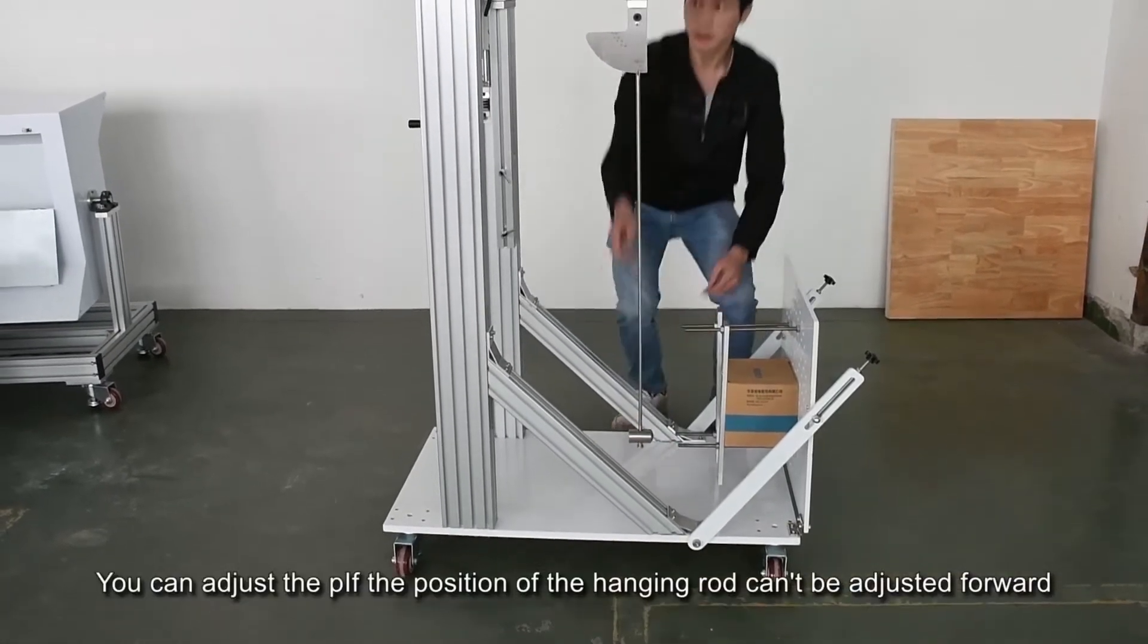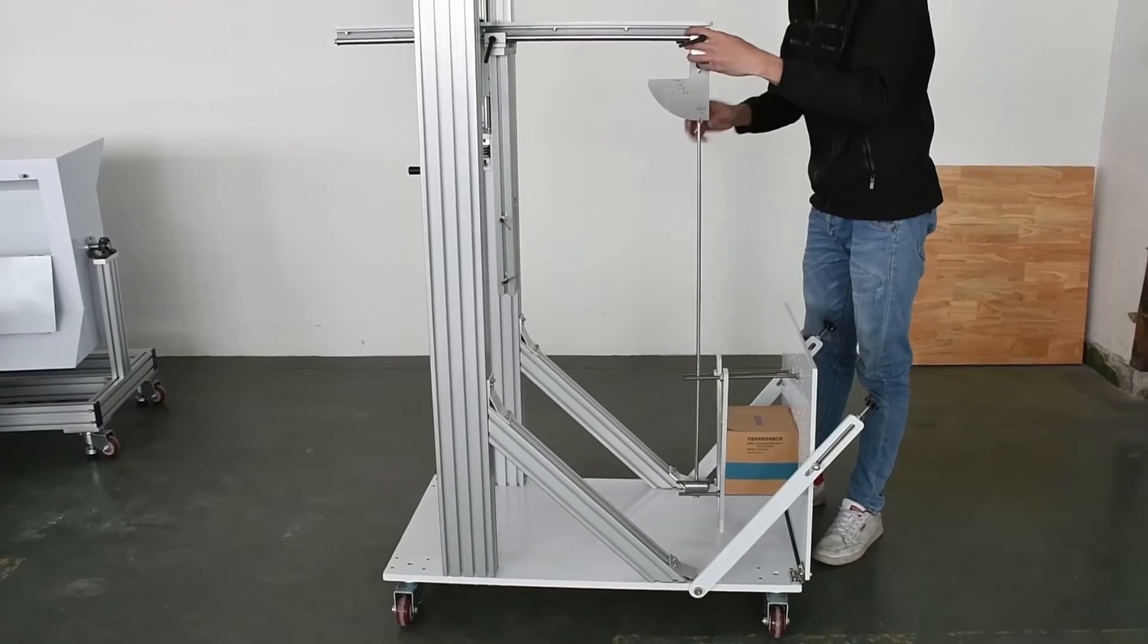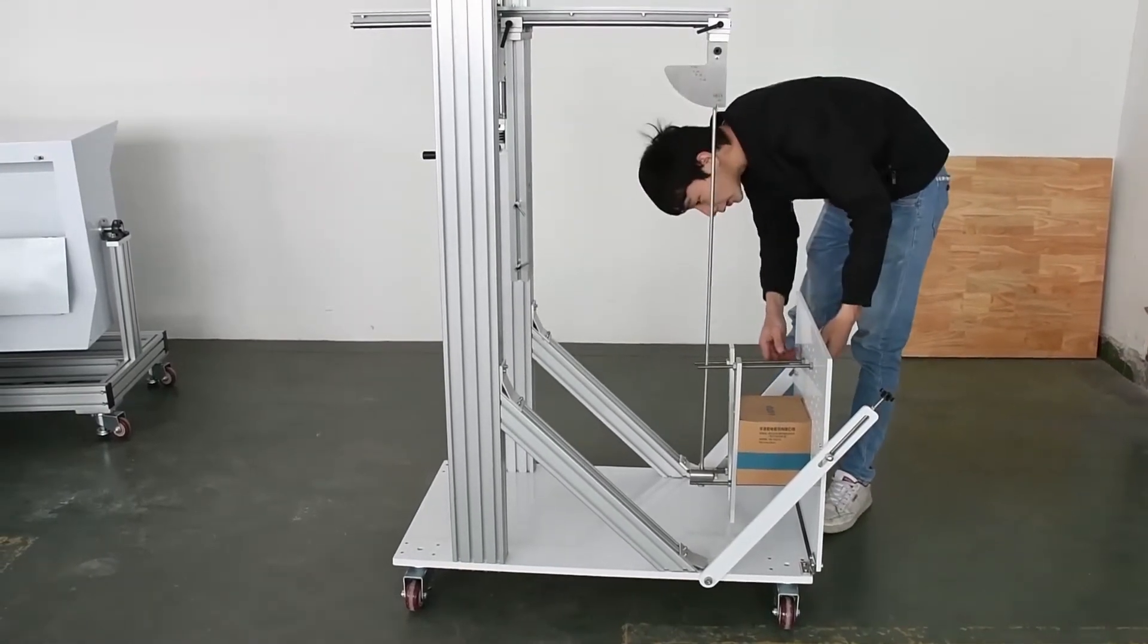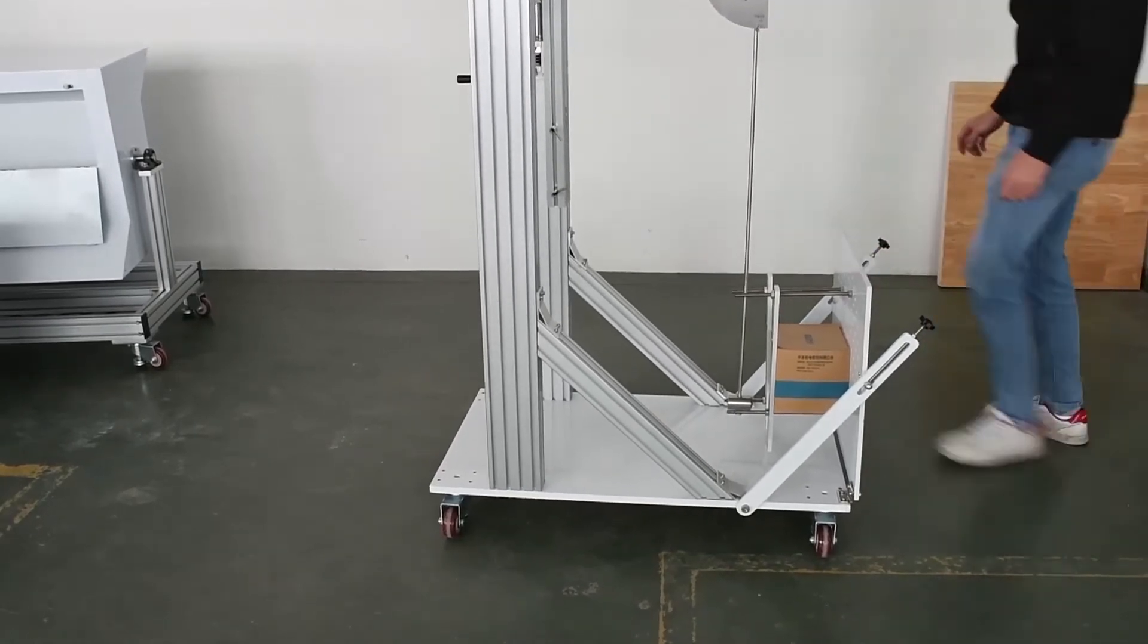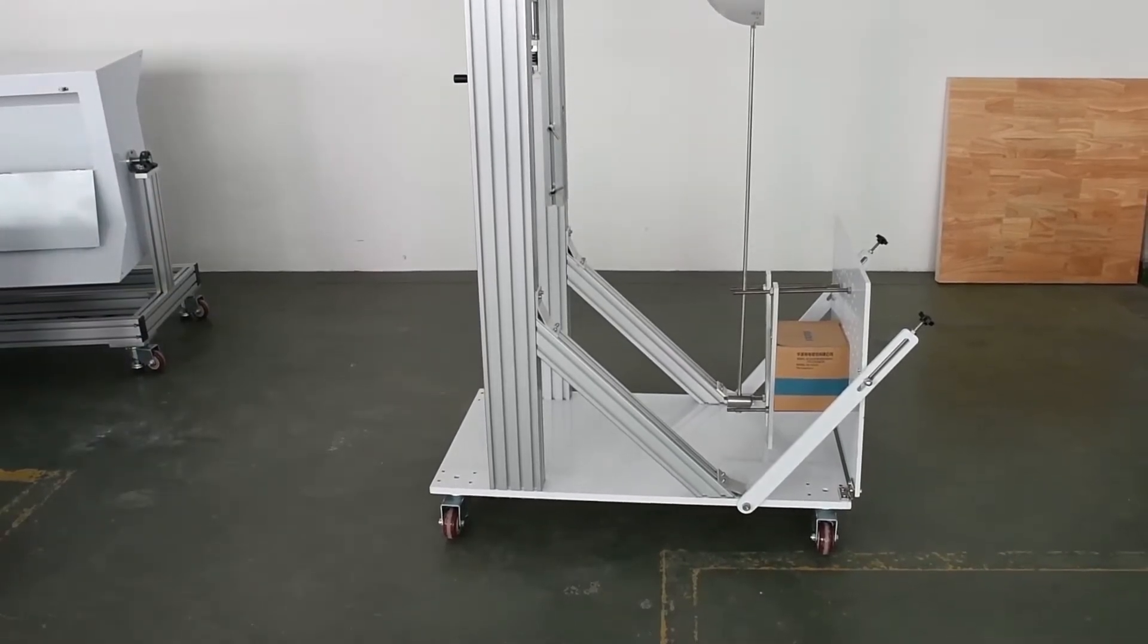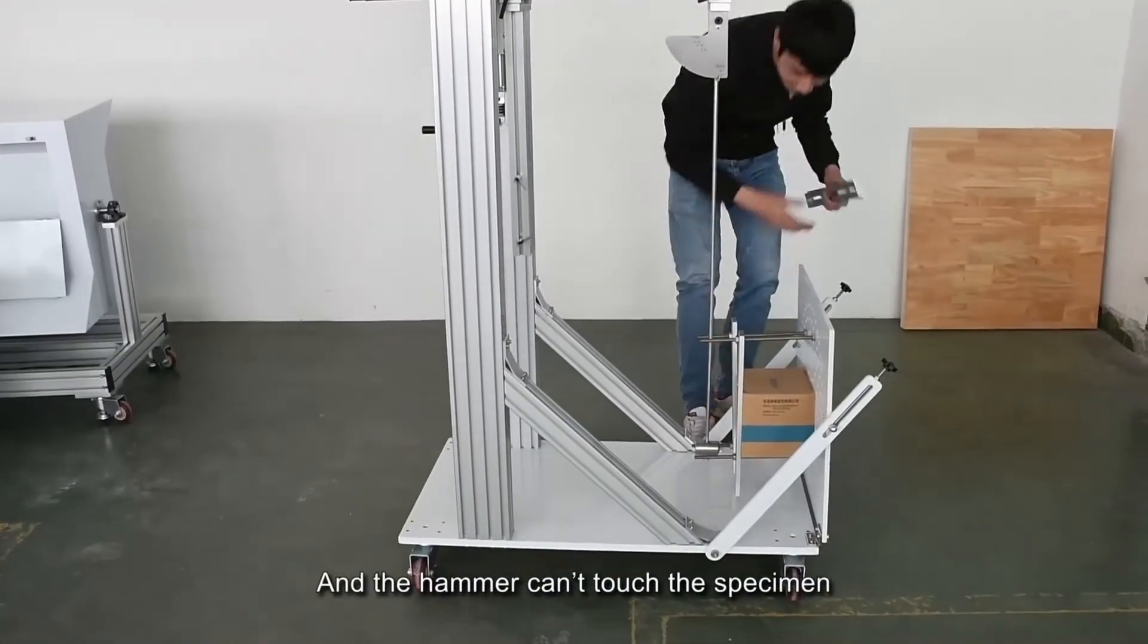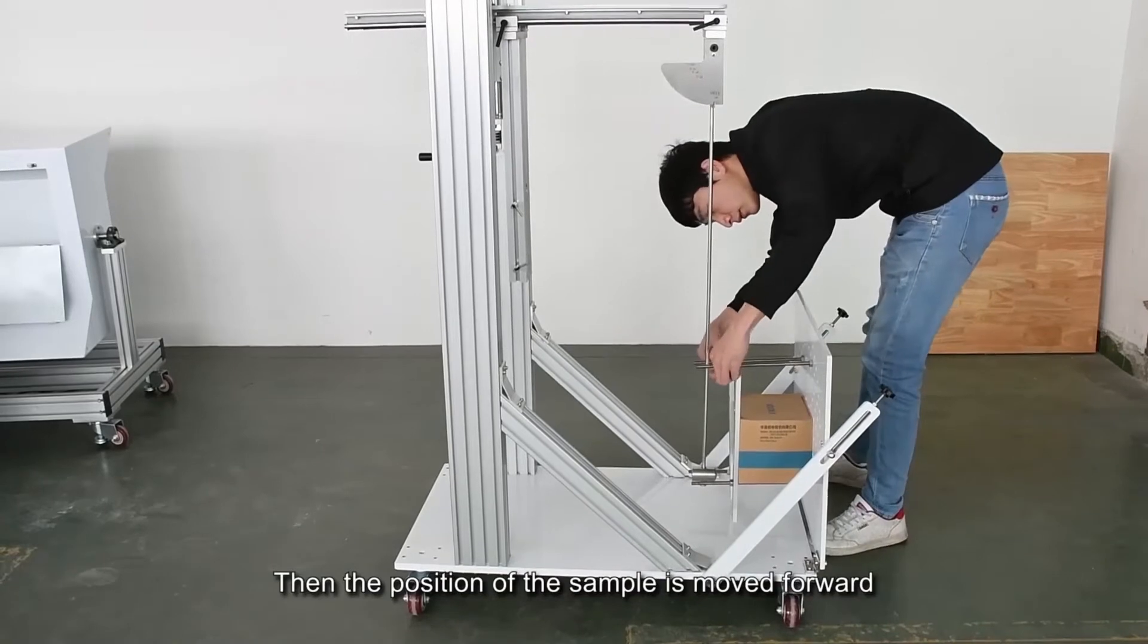If the position of the hanging rod can't be adjusted forward and the hammer can't touch the specimen, we can fix two baffles behind the sample. Then the position of the sample is moved forward.